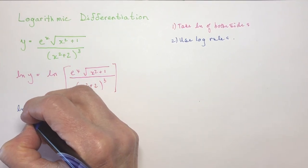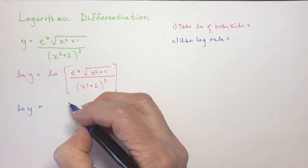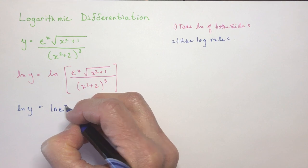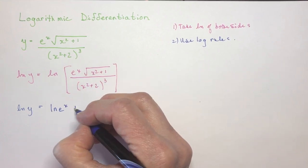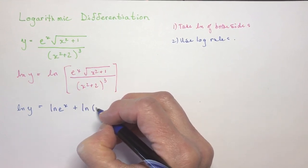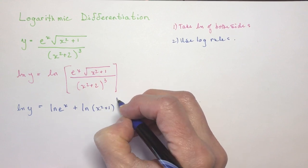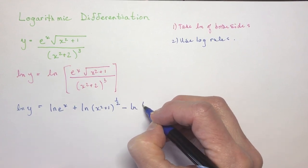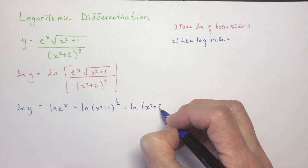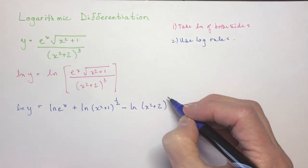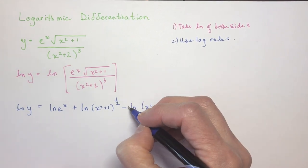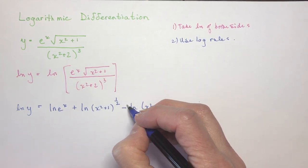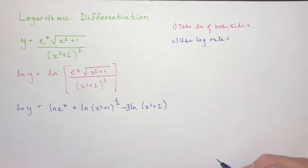This side is still going to be ln y. And now I'm going to take the ln of e to the x. And I'm going to add the ln of x squared plus 1 to the half power. And I'm going to subtract the ln of x squared plus 2. And instead of putting the 3 up here, I'm going to put it right over here now. So you remember that if you have an exponent, the exponent comes to the front. So I'm going to put the 3 here. So all in one step.